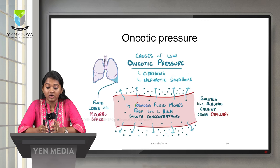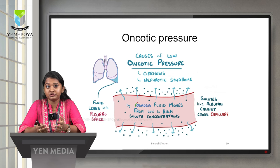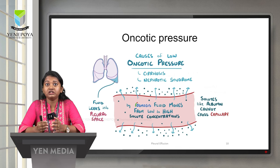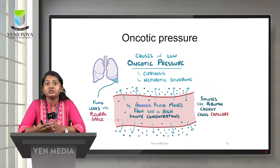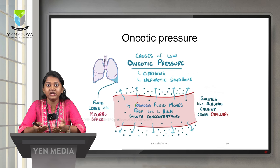Regarding oncotic pressure — oncotic pressure is the pressure of solutes like albumin that cannot cross the capillary barrier. By the process of osmosis, fluids move from low to high solute concentration. When oncotic pressure is decreased, fluid can leak into the pleural space. This decreased oncotic pressure can be due to cirrhosis, where the liver produces very few proteins, and in nephrotic syndrome, where most of the proteins are eliminated in urine.